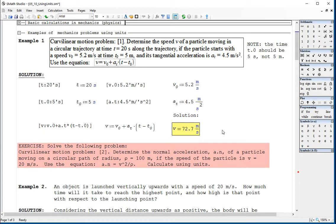We have a problem of curvilinear motion where we are to determine the velocity. So here we could type in text t equals, that's what we need to determine, and then start typing the data that we know. For example, we say determine the velocity of a particle moving in a circular trajectory at time t equals 20 seconds if the particle starts with a speed of 5.2 meters per second at time t equals 5 meters. That's a typo right there, that should be 5 seconds.